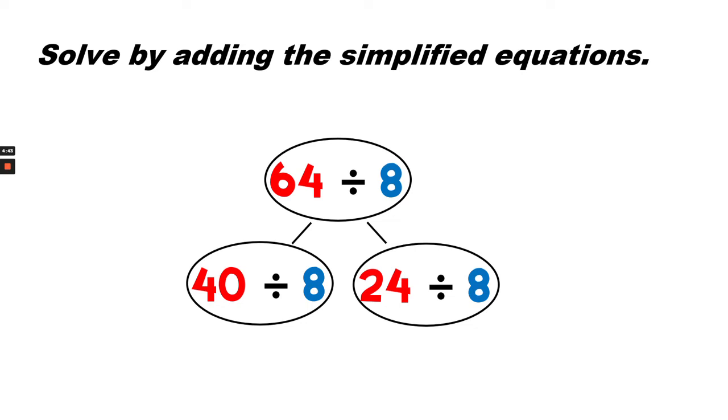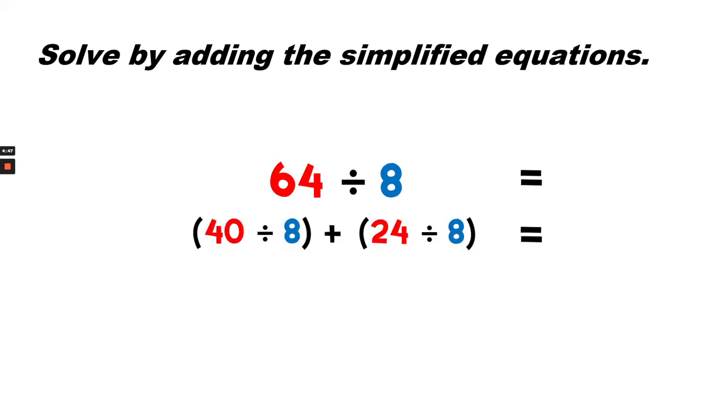So we can solve by adding the simplified equations. Five plus three. Now we know that 64 divided by 8 equals 8.